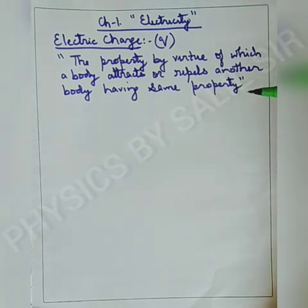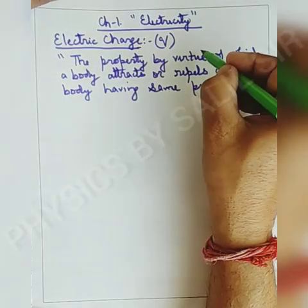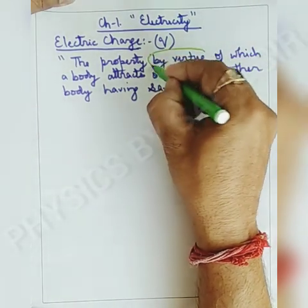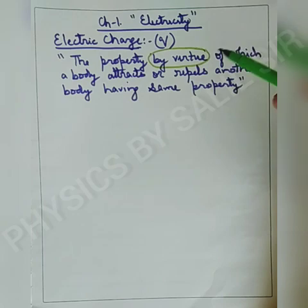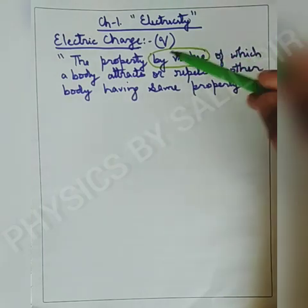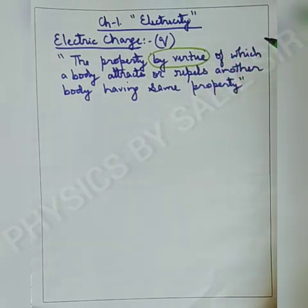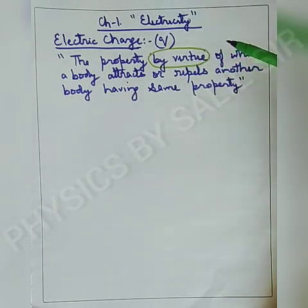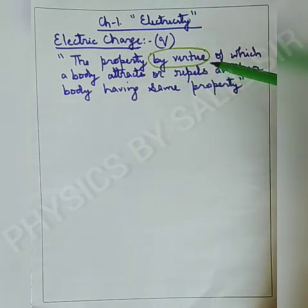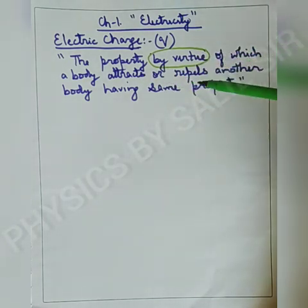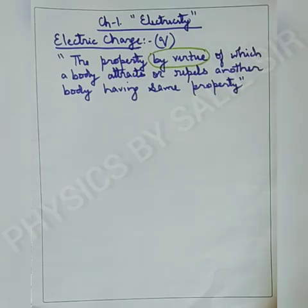It means that body has got the power of attraction or repulsion that can act on another body. 'By virtue' means 'due to which.' The property can be written in another form also: the property due to which a body attracts or repels another body having the same property.